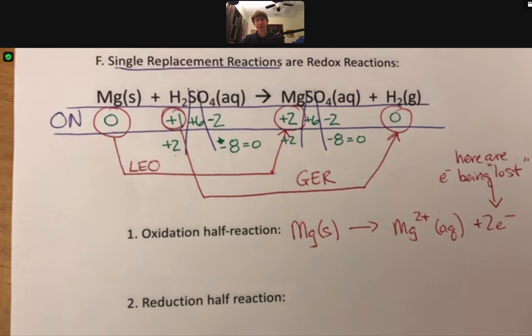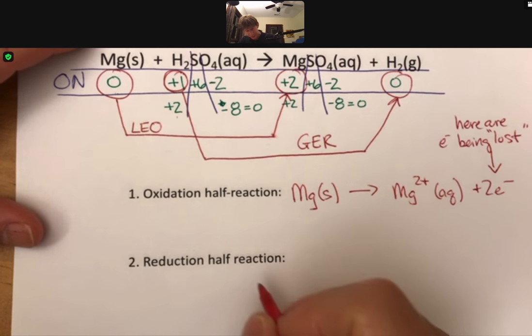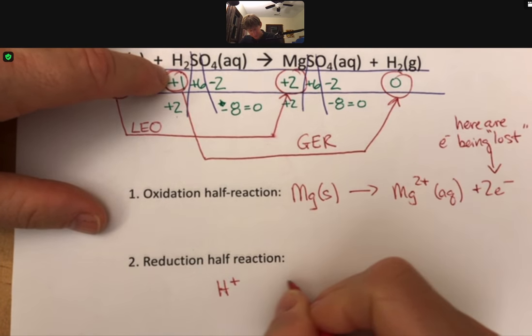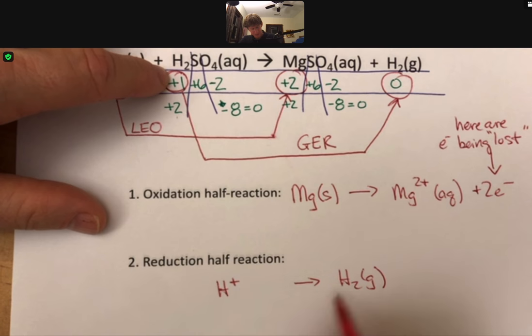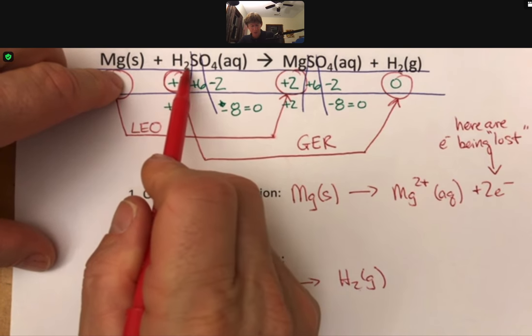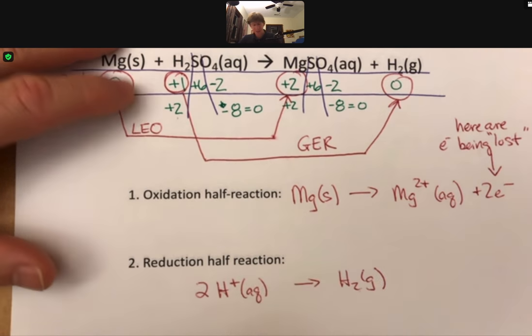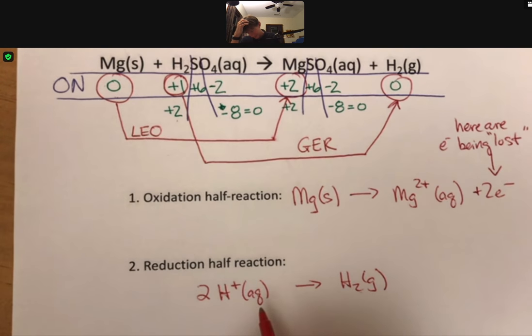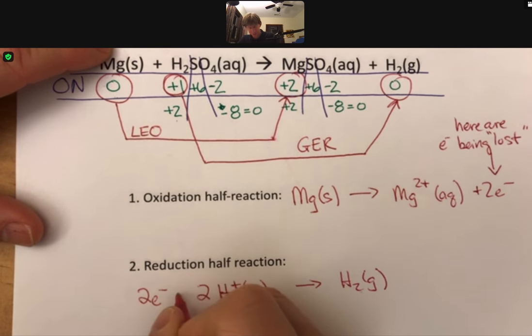For the reduction half reaction, keeping everything on screen if we can, we have H+ here. I'm going to leave some space, going to H2 gas. There's two H's here, and lo and behold, there's two H+ over here, and they're aqueous. Sulfuric acid is a strong acid, it is also a strong electrolyte as we've talked about. I have two pluses, I'm going to need two electrons here as well.